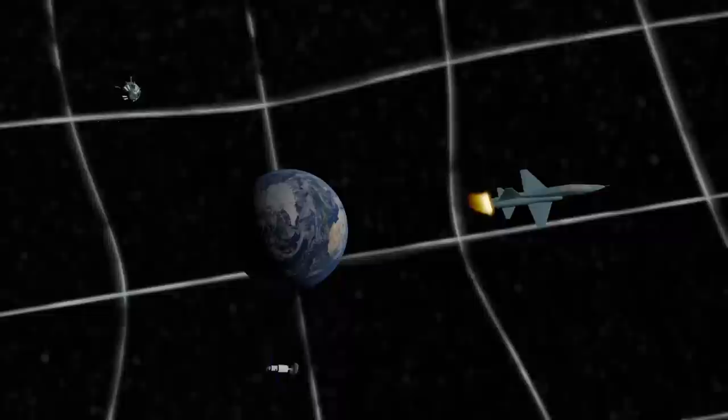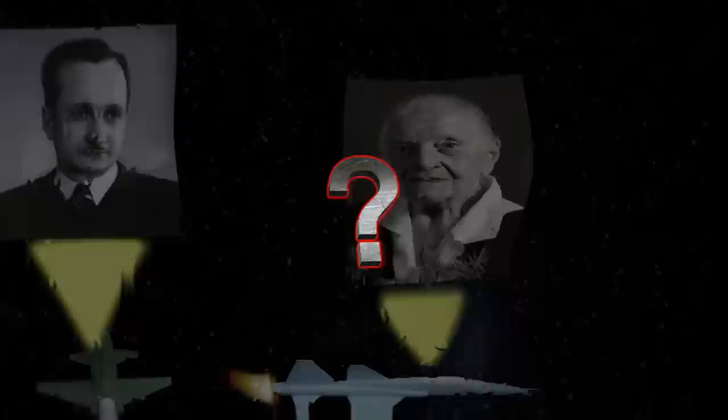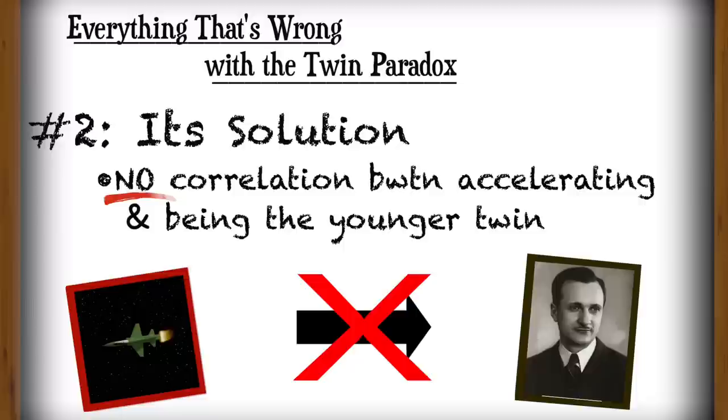Meanwhile, the twin who is constantly firing her rockets ends up older. What does this mean? Well, it demonstrates conclusively that acceleration does not resolve the twin paradox. This is a shocking result, namely because it means the explanations we've been given for the last hundred plus years have been definitively and undeniably wrong, or at least grossly incomplete.